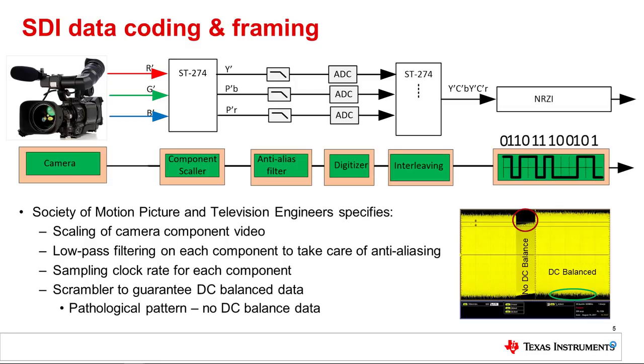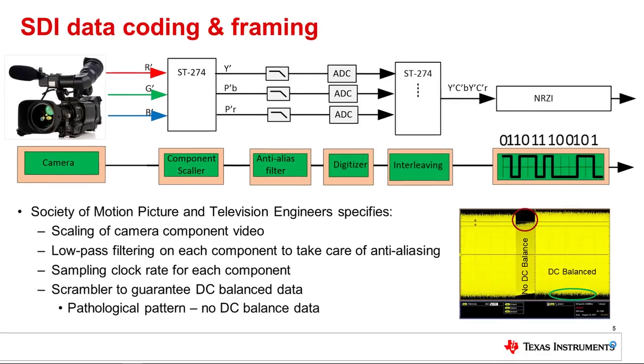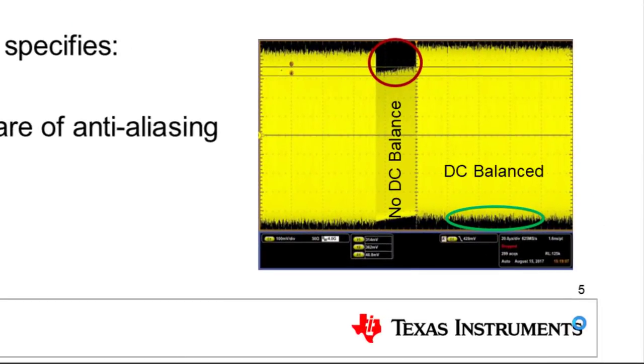In this scope shot, we are showing differences between these two patterns. The DC balanced data midpoint is constant while the non-DC balanced data shows a shift in DC value. This shift is called DC Wander. A non-DC balanced data pattern reduces cable equalizer performance.